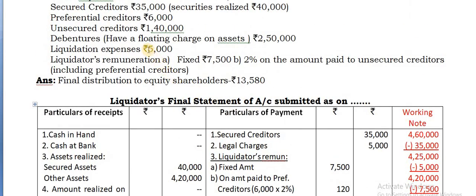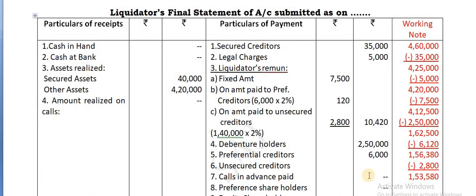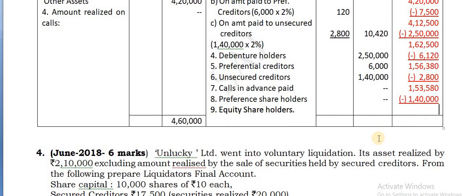Out of this, first you pay 1,40,000 to the unsecured creditors. So that will be paid first - take that. Unsecured creditors 1,40,000 you can take. Deduct the same amount here - 1,40,000. Still how much you have? The balance is 13,580.